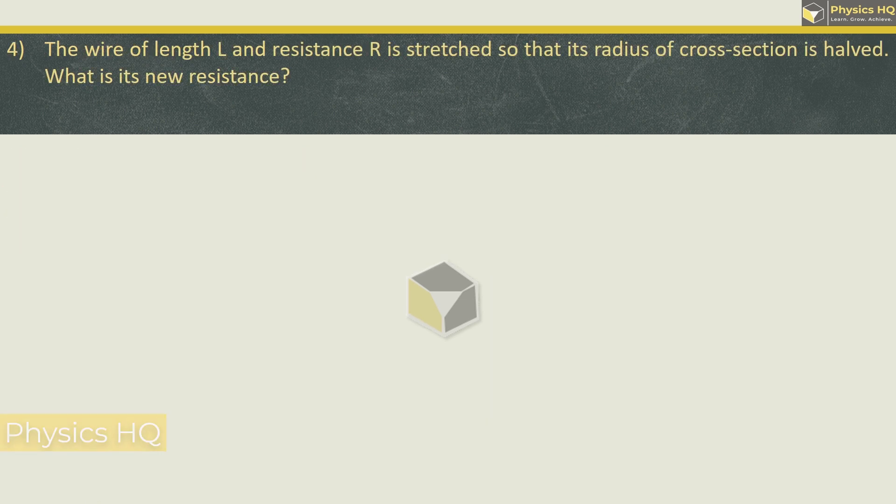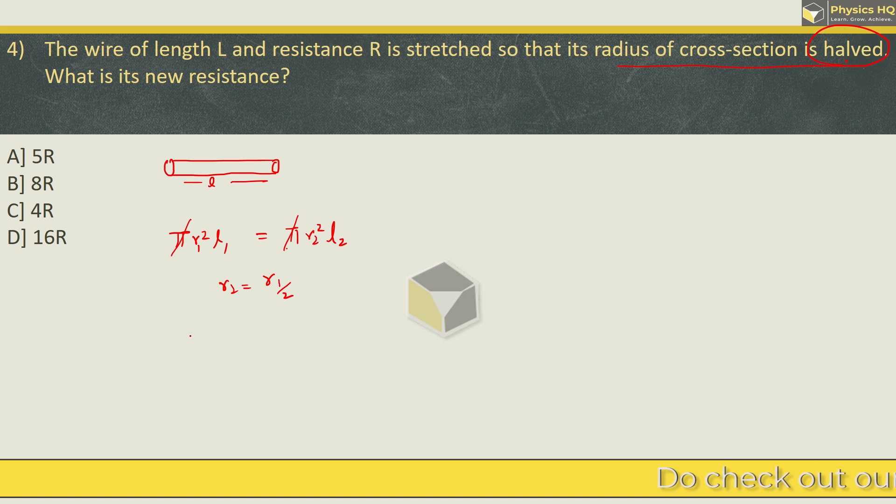Next: A wire of length L and resistance R is stretched so that its radius of cross section is halved. What is its new resistance? 5R, 8R, 4R or 16R? Now in both cases please remember, wire volume is the same. And wire we can consider as a cylinder. Cylinder volume is given by pi R square into H, or length. So initially resistance length is this, and finally resistance length is this. R2 and L2.